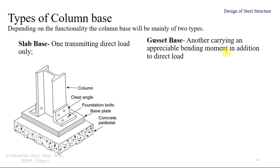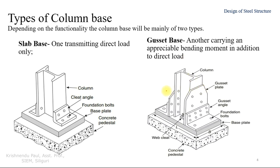The second type is the gusset base, used where there is an appreciable bending moment in addition to direct load. In that case, we make an arrangement so the column base can support the bending moment. In the figure, you can see the gusset plate between the column flange and the cleat angle, with a beveled connection. There is also an angle section on the web portion connecting the column web and the base plate.